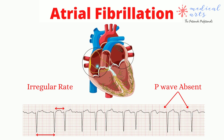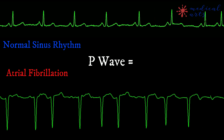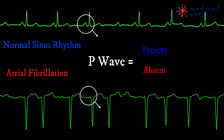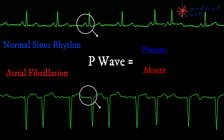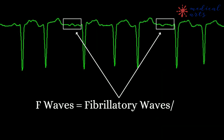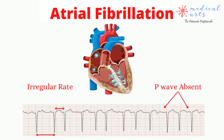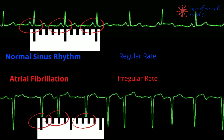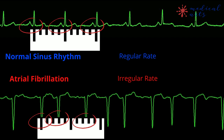This abnormal atrial behavior translates on the ECG as absent P-waves; only F-waves can be seen, which refers to fibrillatory waves. This condition makes the atrial contractions insufficient to trigger ventricular contractions. As a result, it causes irregular heartbeats that can be seen on the ECG as the irregular distance between QRS complexes.